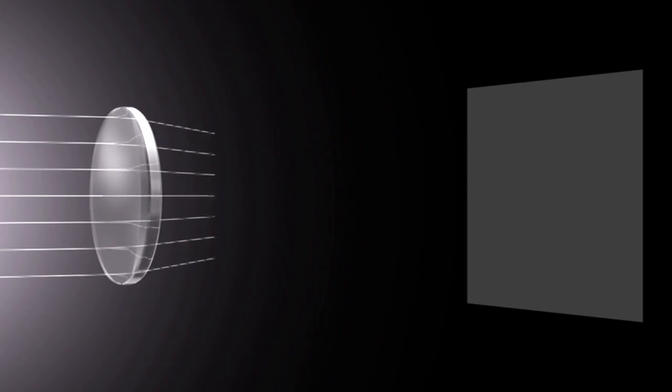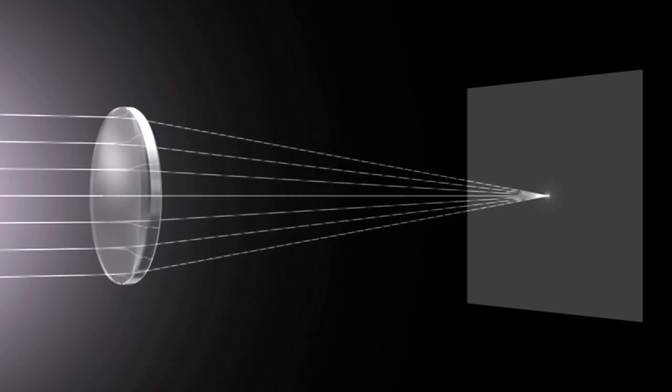Light that hits the lens's optic axis in a parallel line is refracted by a convex lens and brought together into a single point. This is the focal point.